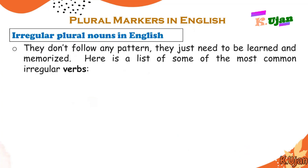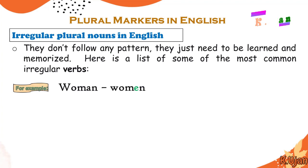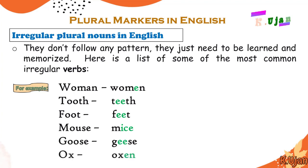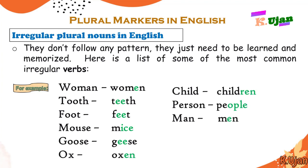These are the various rules, but there are also nouns which are irregular — called irregular plural nouns in English. They don't follow any pattern and must be memorized. Common examples include: woman/women, tooth/teeth, foot/feet, mouse/mice, goose/geese, ox/oxen, child/children, person/people, man/men. There is no rule; one has to just memorize these.